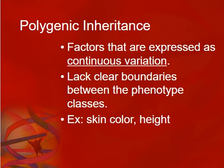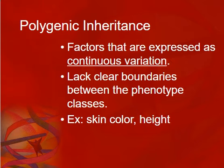Last but not least is polygenic inheritance. Many genes influence one trait. Anything that has a range of possibilities is going to be polygenic inheritance — human height, human weight, blood pressure, skin color. These are all things where there's definitely no either/or; it's a gradient. That always points to polygenic inheritance.